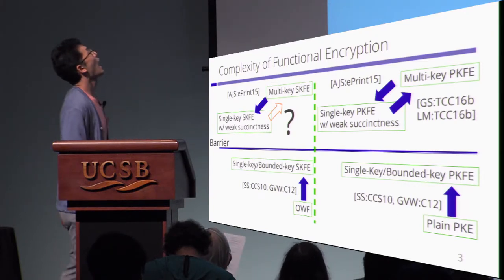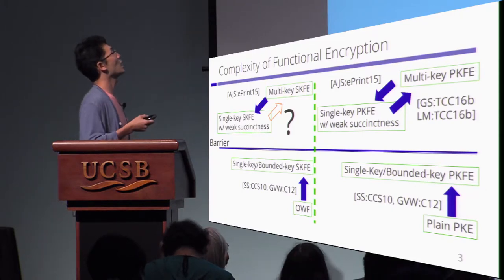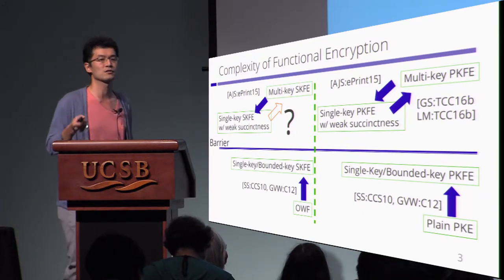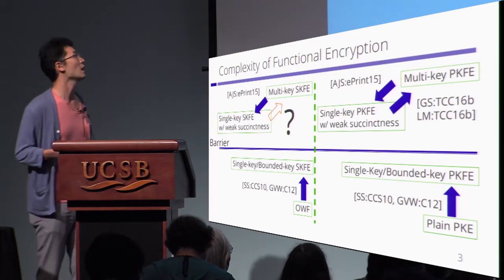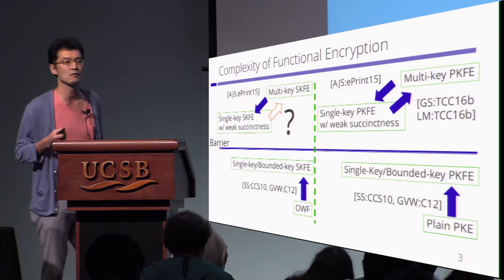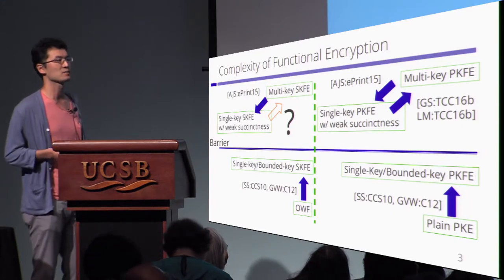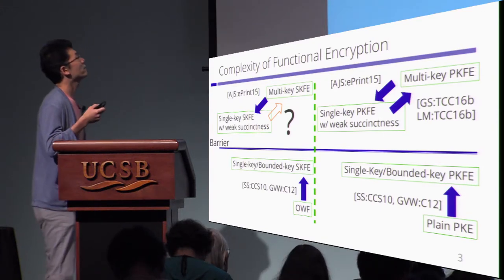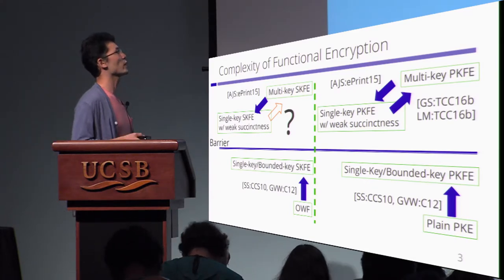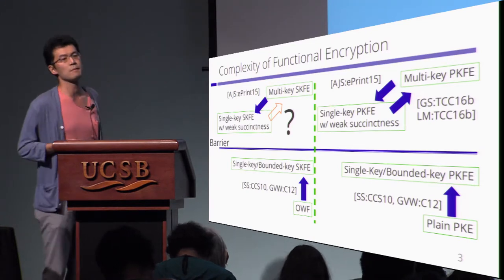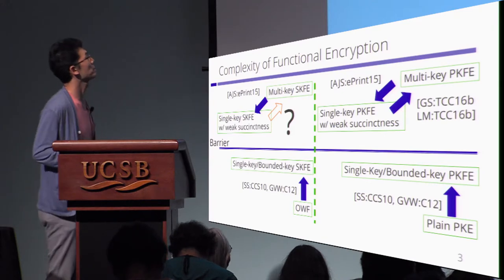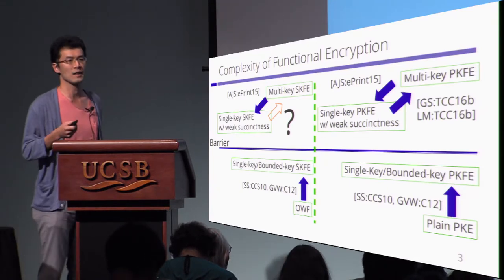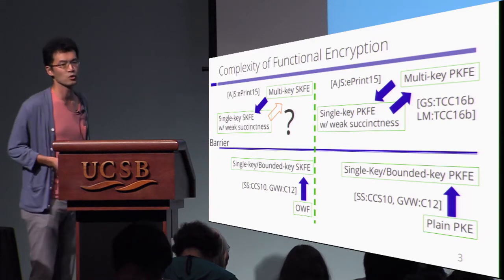It is known that if we have a multi key public key functional inclination or secret key functional inclination, we can construct a single key secret key or public key functional inclination with weak succinctness. Weak succinctness means that the encryption circuit of functional inclination is sub-linear in the maximum size of circuit which is embedded in the functional decryption key. And in the public key setting, if we have single key public key functional inclination with weak succinctness, then we can construct a multi key public key functional inclination by using single key functional inclination with weak succinctness.